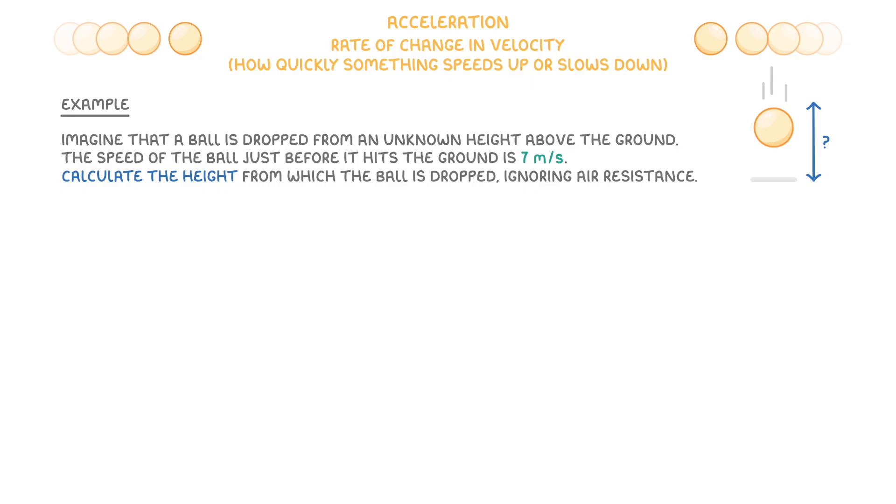Now at first, this question seems a bit impossible, because we're only given the ball's velocity at the end of its journey, so its final velocity, which is 7 meters per second. However, because it's been dropped, we can assume that it started off stationary, and so its initial velocity was 0 meters per second. Also, anything that gets dropped will accelerate downwards at 9.8 meters per second squared, because of the force of gravity.